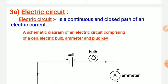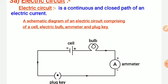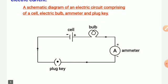A circuit is of two types: closed and open. Here a schematic diagram shows an electric circuit comprising a cell, electric bulb, ammeter, and a plug key. When the plug key is closed, it is a closed circuit and current flows. The ammeter is shown here for measuring the magnitude of electric current.